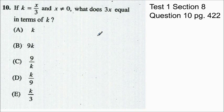It says if k equals x divided by 3 and x does not equal 0, what is 3x equal in terms of k? Well first we have to note that we have a restriction here and the restriction is that x cannot equal 0.